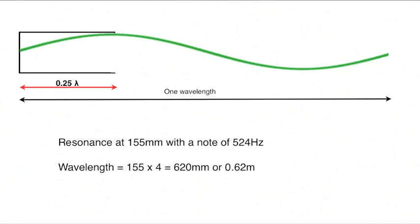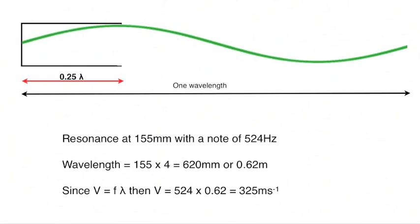For any wave, its velocity is equal to its frequency multiplied by its wavelength. The frequency of this fork was 524 hertz. The wavelength 0.62 meters gives us a speed of sound in air of 325 meters per second.